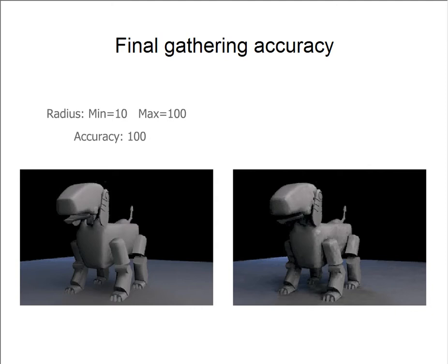The image on the right, on the other hand, we have a very small radius. So we're resolving a lot of the indirect illumination detail, but because the accuracy is so small, we're getting a lot of noise and sampling problems. So we need to boost the accuracy with a small radius to get an accurate indirect illumination picture.